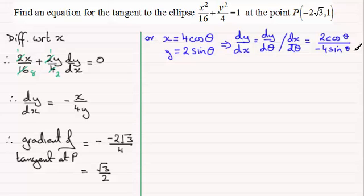And this cancels. We can simplify this divide top and bottom by 2 so you end up with minus a half of cos theta over sine theta. So this is our general gradient at any point on the curve.